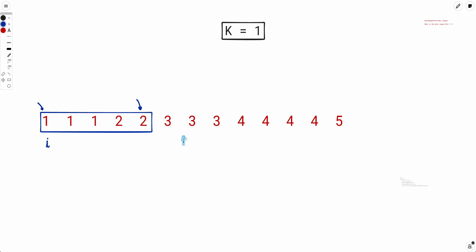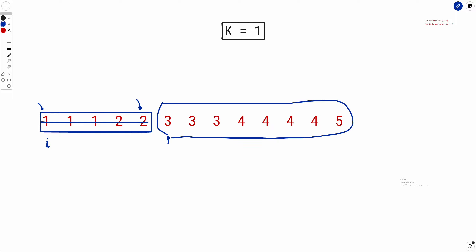We can start the second range from any index after the first range ends. The problem now becomes: we know how many prizes are captured by the first range; now give me the best range in the remaining part of the array. That's the new subproblem — given a part of the array starting at some index, what is the maximum number of prizes capturable by selecting one range?